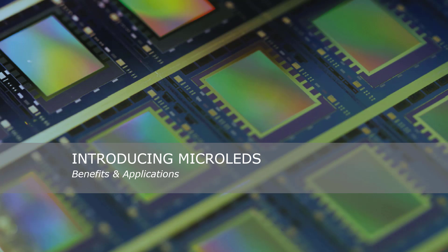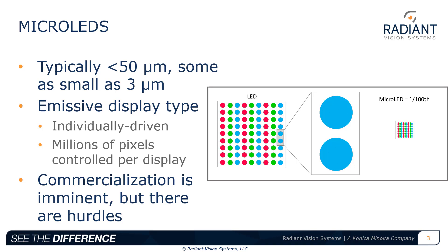First, a brief introduction to micro-LEDs and their applications. As the name suggests, micro-LEDs are very small LEDs, typically smaller than 50 micrometers with some as small as 3. Micro-LEDs are emissive, which means they are individually driven and produce their own light output. Each micro-LED in a display is a sub-pixel that produces light for a display pixel. The unique signal of millions of sub-pixels in a micro-LED display must be controlled to ensure proper output at each pixel.